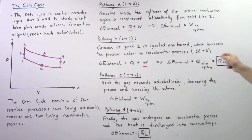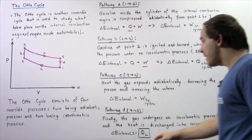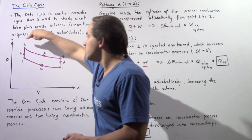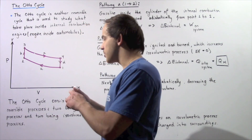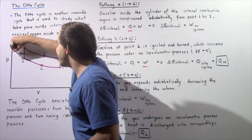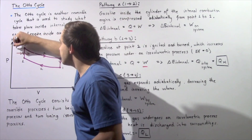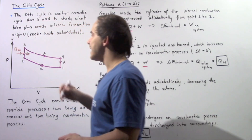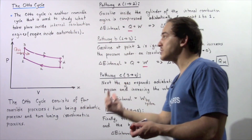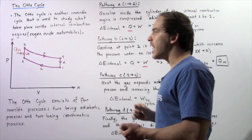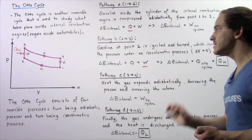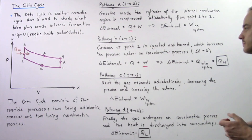This quantity is usually given by QH. As we go from position two to position three, heat QH flows into our system. Our pressure increases, the volume remains constant, and no work is done during pathway B.